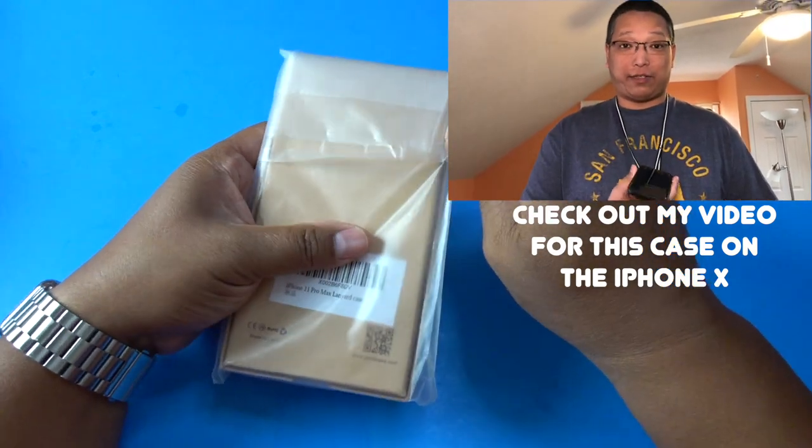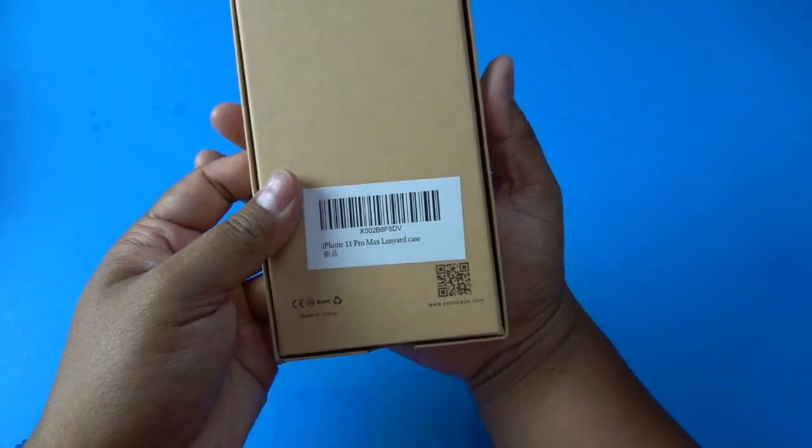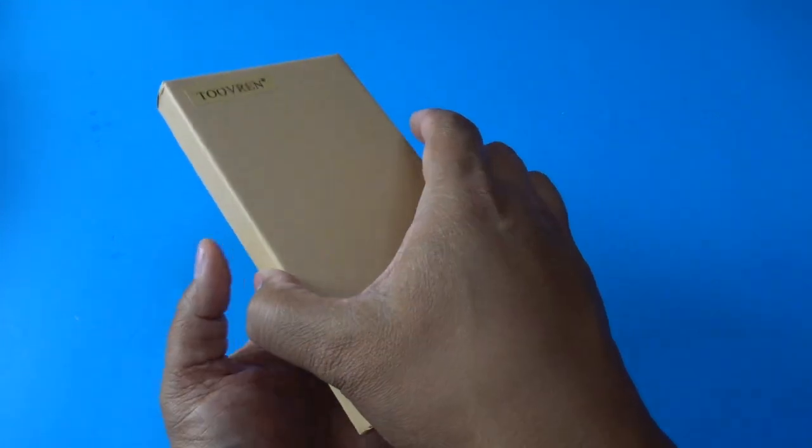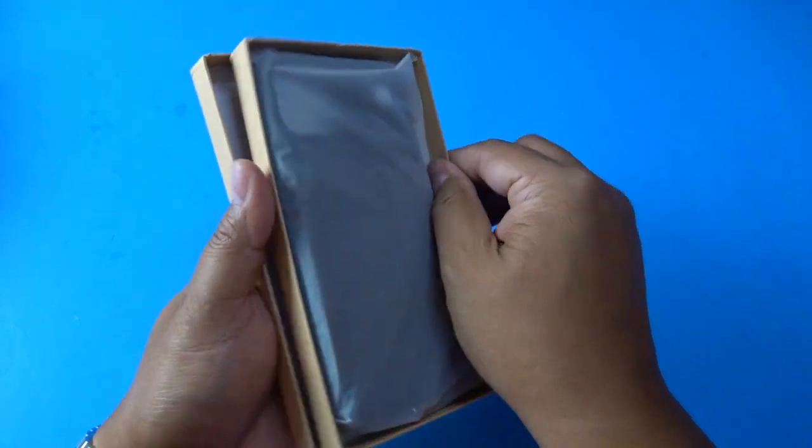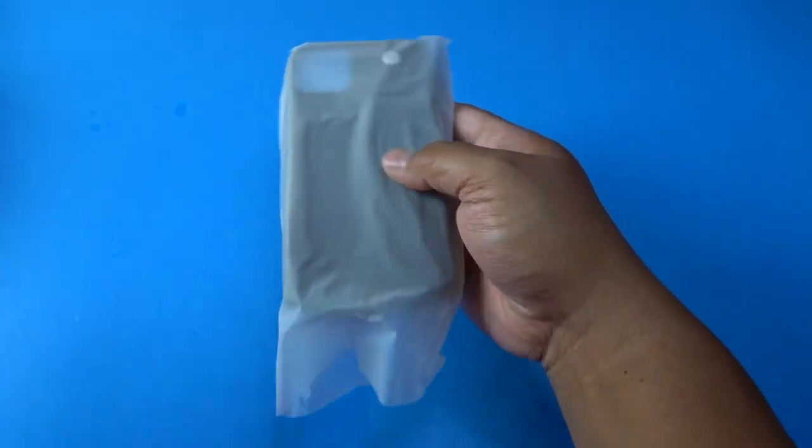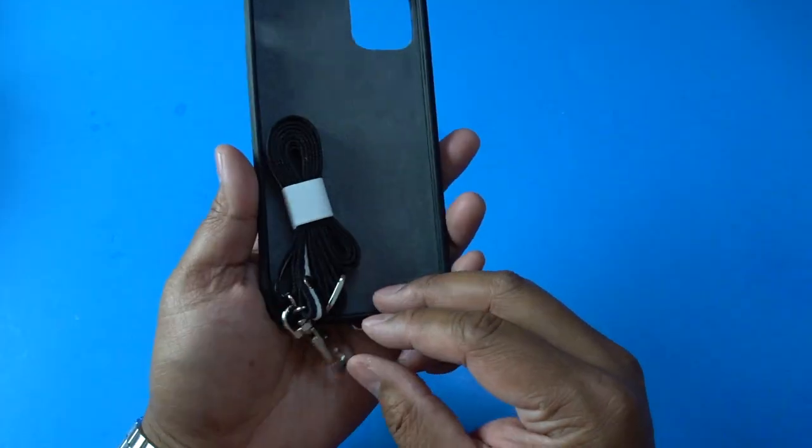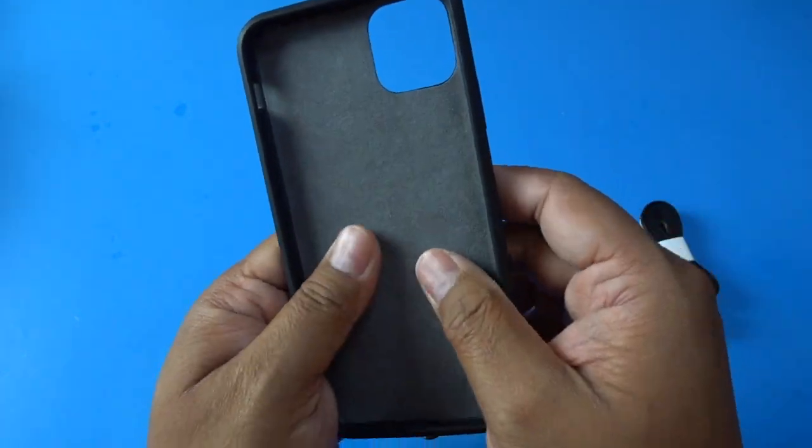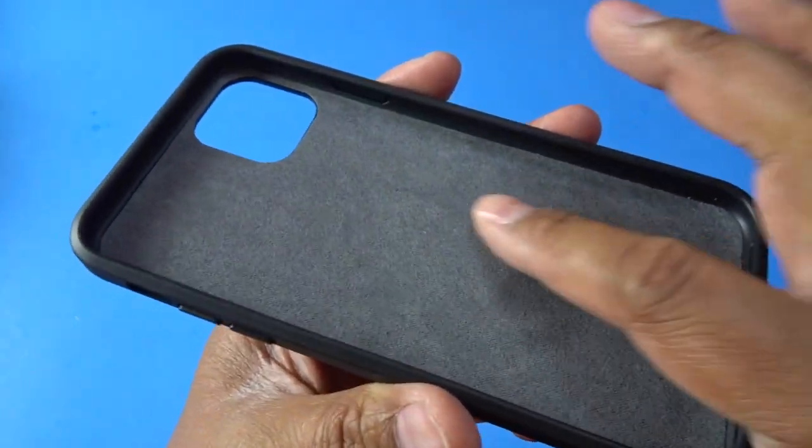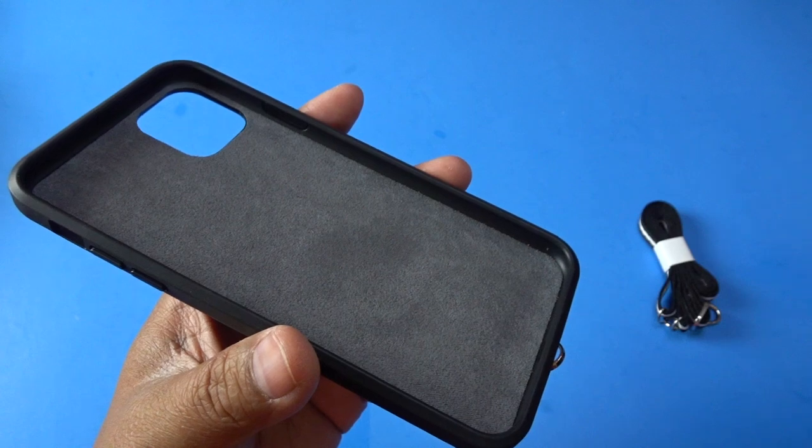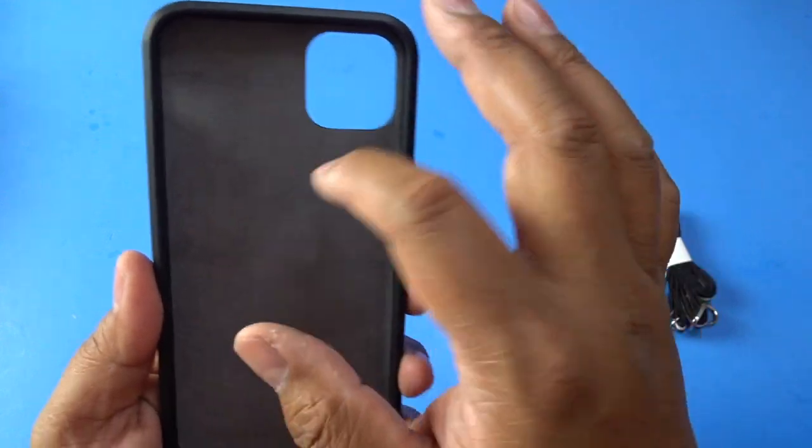So let me go ahead and unbox this to show you what it's like. Look at that. So I can tell that they've already made some improvements. Wow look at this. The inside is like microfiber-ish material so that it'll preserve and protect your brand new iPhone which is great. Nice cut out.